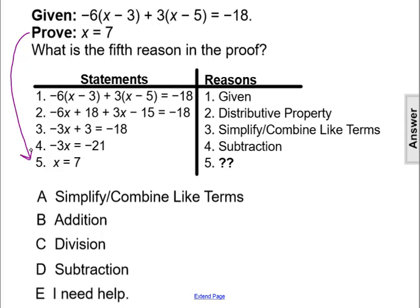x equals 7 was our goal, so this is the last statement and reason we're going to use. We just need to see what was the reason. How did we get x equals 7? How did we go from negative 3x equals negative 21 to x equals 7?